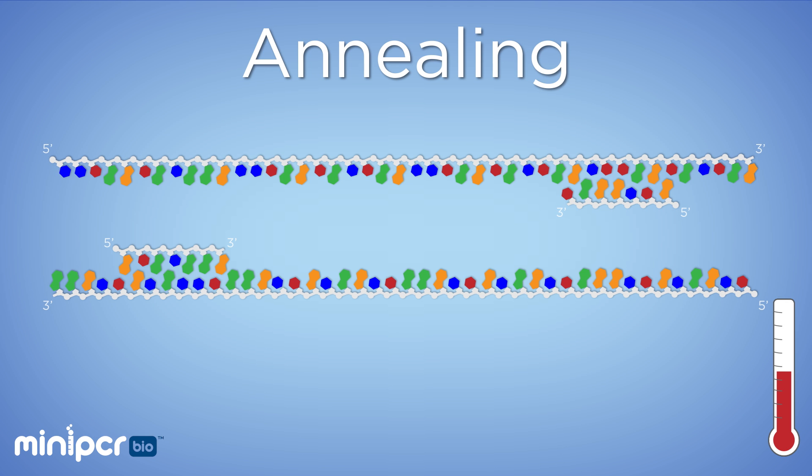Annealing temperatures are typically between 50 to 65 degrees Celsius, but the exact temperature you use in your reaction depends on the specific length and sequence of the primers themselves. Our reaction may be allowed to anneal for as short as 5 seconds, or as long as 30 seconds.